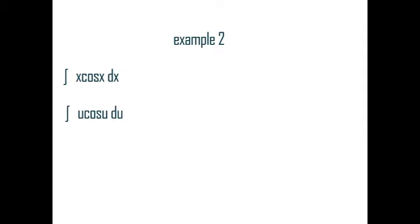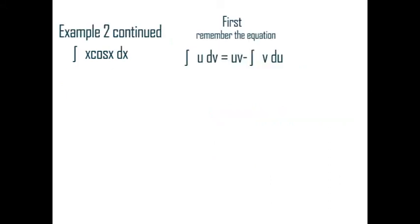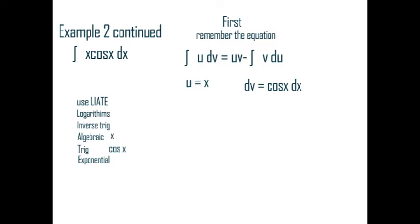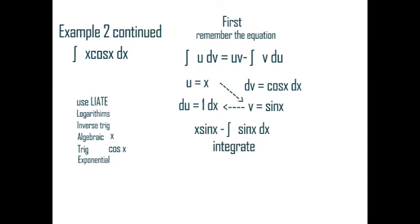Now let's try a real problem. Example 2: Integrate x cosine x dx. In this problem, substitution does not help, so integrate by parts. First, remember the equation, then use LIATE — it's algebraic, then trig. So u equals x, dv equals cosine x. Then the derivative of u equals dx, and the anti-derivative of dv equals sine x. Plug that into our equation, then integrate sine x dx, which equals negative cosine x. The negatives cancel, giving you x times sine x plus cosine x.